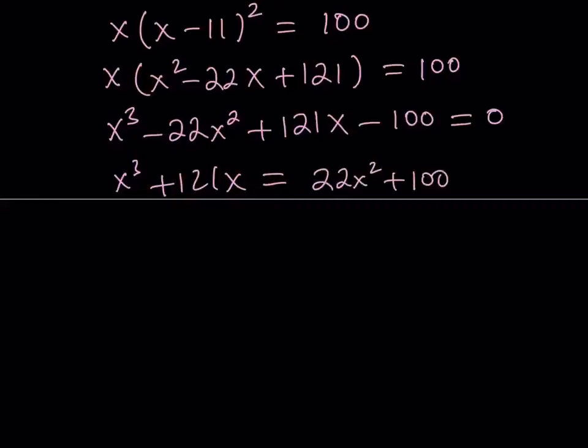Now here's what I'd like you to notice. If you add the coefficients on the left-hand side, you're going to get 1 + 121, which is 122. And if you add them on the right-hand side, you get 22 + 100, which is also 122. The sums are equal, which means when you bring them to the same side, the difference is going to be 0.